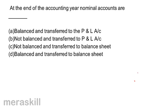At the end of the accounting year, nominal accounts are: A, balanced and transferred to the profit and loss account; B, not balanced and transferred to profit and loss account.